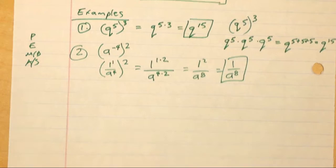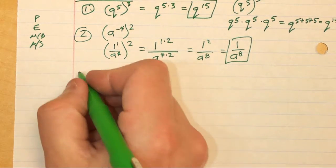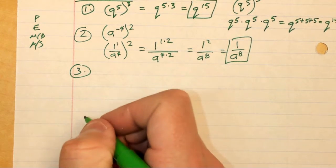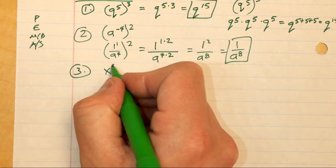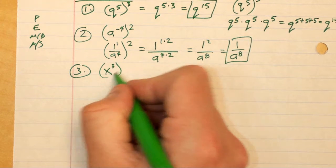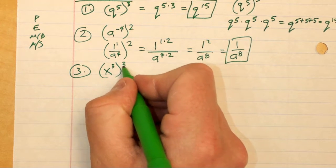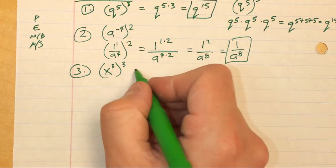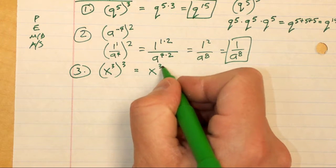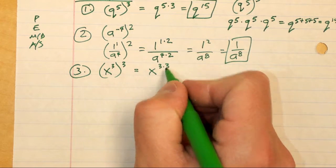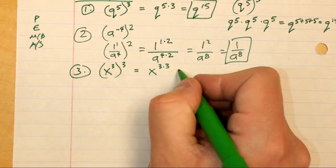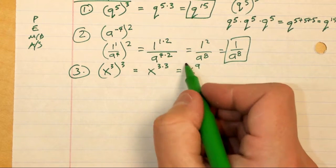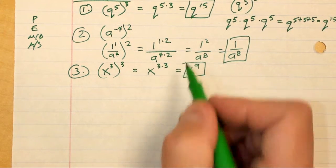Moving on to the third example: I have x to the third power raised to the third. This is just going to be x to the third power times three, which gets me x to the ninth power. This is very similar to the first example — just bringing it back so you remember what we're trying to do.